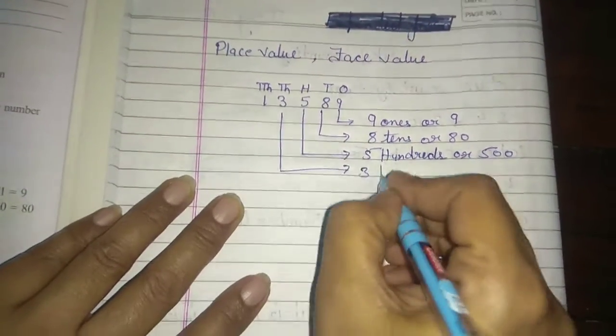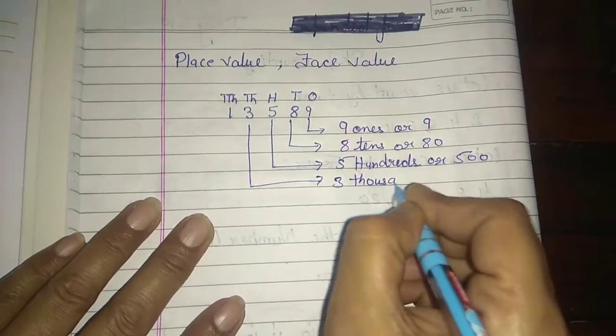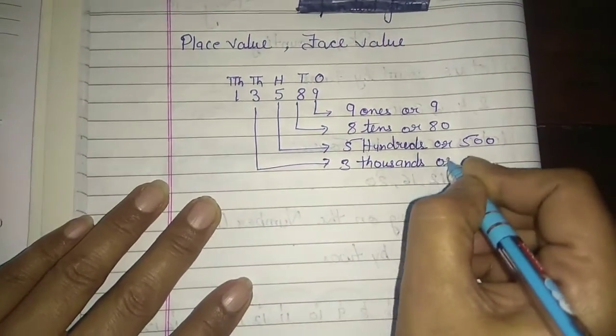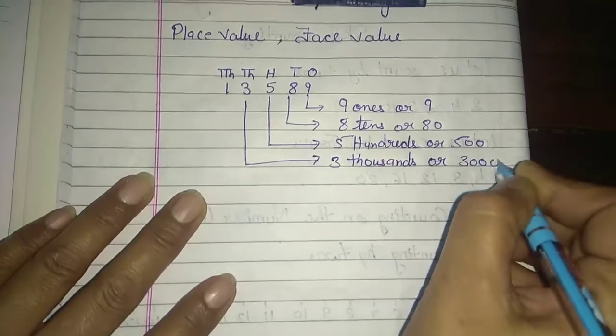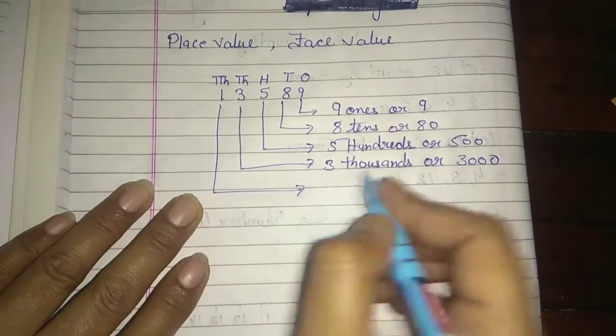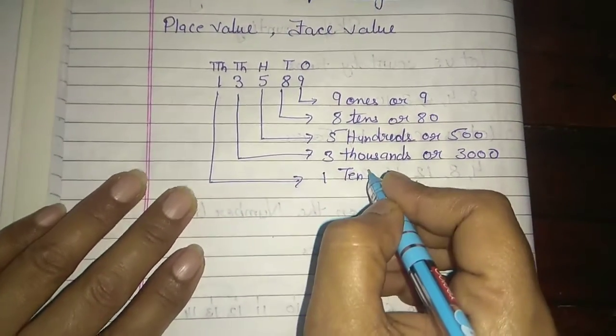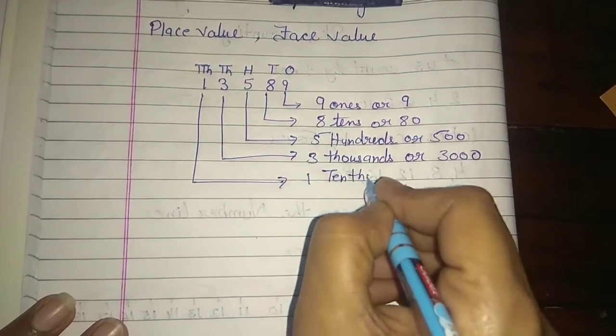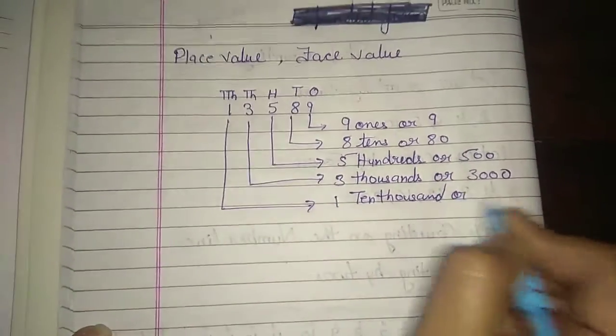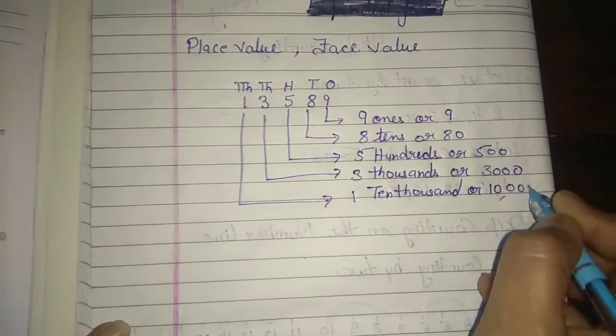Three is what? Three times thousand, which is three thousand. And what will be one? One times ten thousand, which is ten thousand.